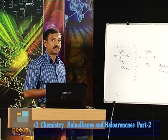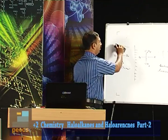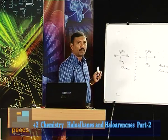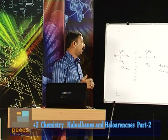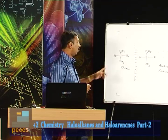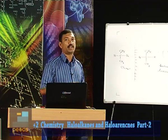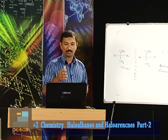The second condition is dissymmetry. A molecule is said to be dissymmetric when it does not possess a plane of symmetry — the molecule cannot be cut into two equal halves through any particular plane. Such molecules are called dissymmetric molecules. These two are the conditions for a molecule to be optically active.